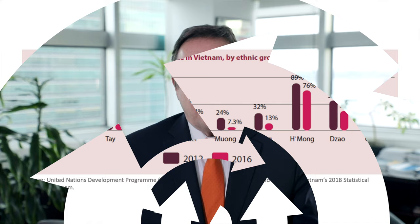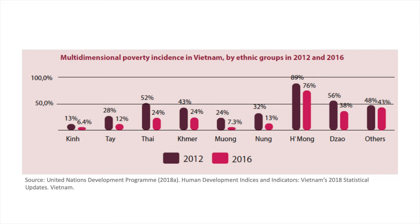Vietnam, for example, launched its national MPI in 2014. It is using the results generated by the MPI combined with income measurements to provide tailored social policies and strategies to help people escape poverty and deprivation. In addition, Vietnam has used its national MPI to redistribute budget allocations between regions to prioritize the areas with the highest poverty rates.